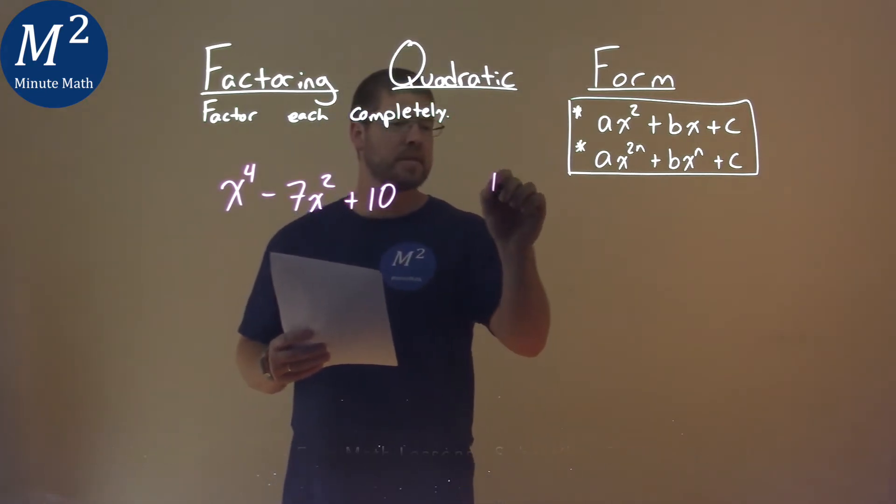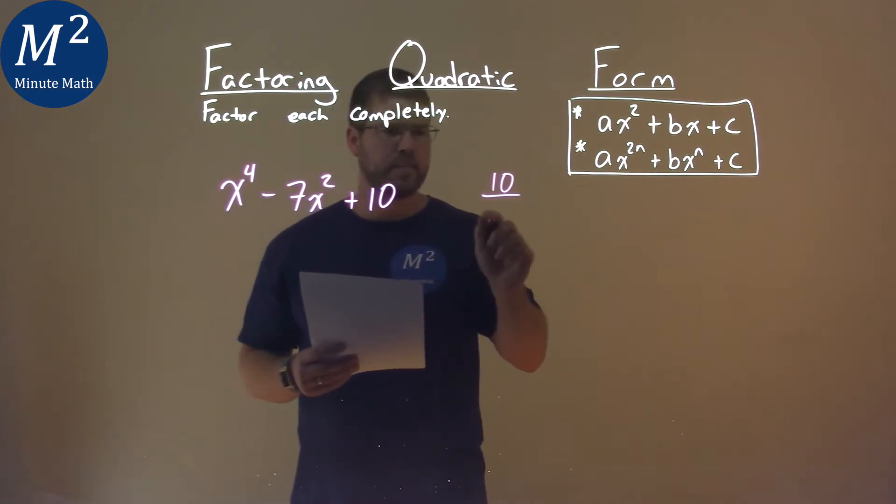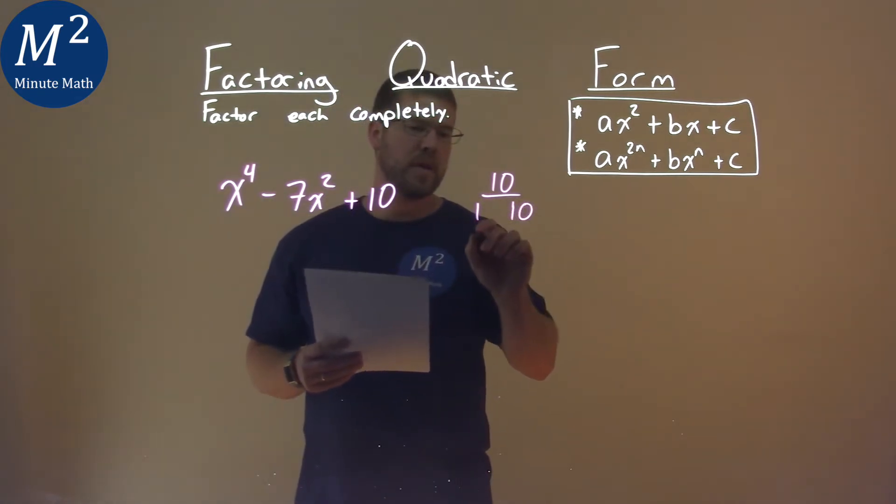We take our c value, which is 10, and we find pairs that multiply to be 10. 1 and 10, and 2 and 5.